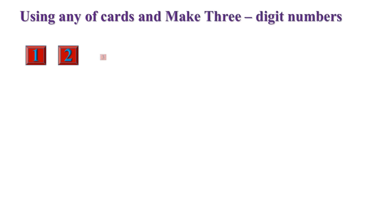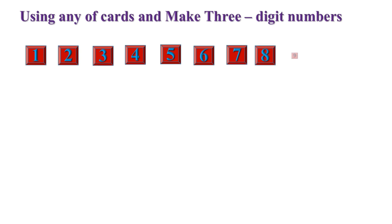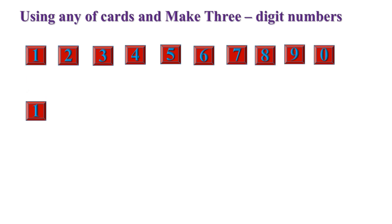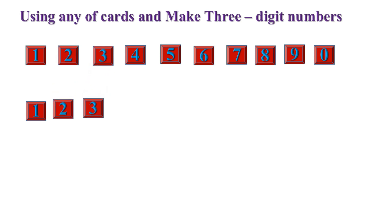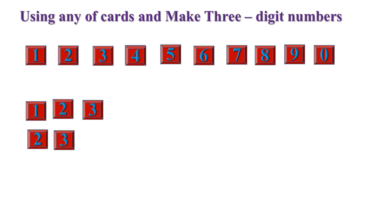Using any number cards, make three-digit numbers. The number cards are zero to nine. First, I use three cards: one, two, and three — the number is one hundred and twenty-three. Second, cards two, three, and four — the number is two hundred and thirty-four.